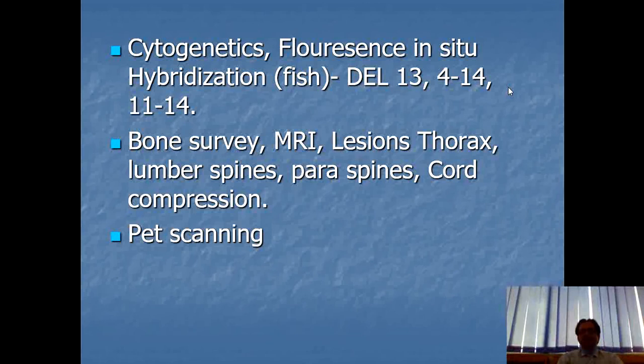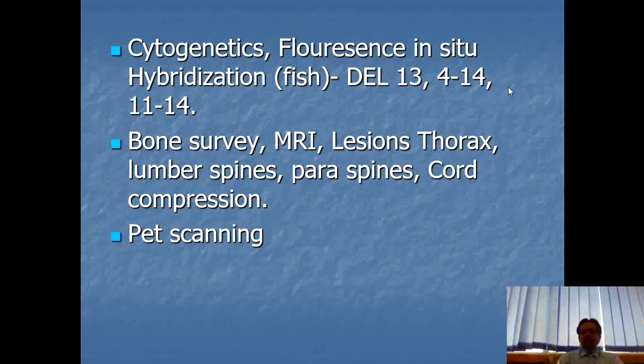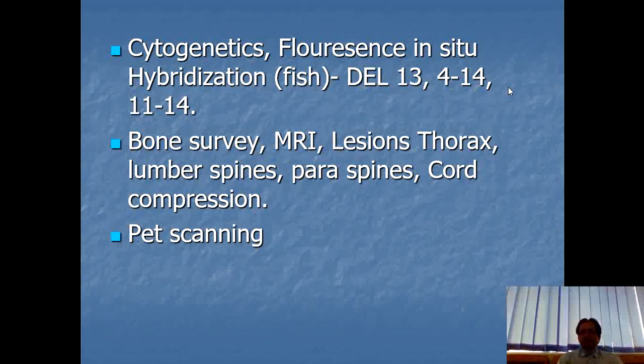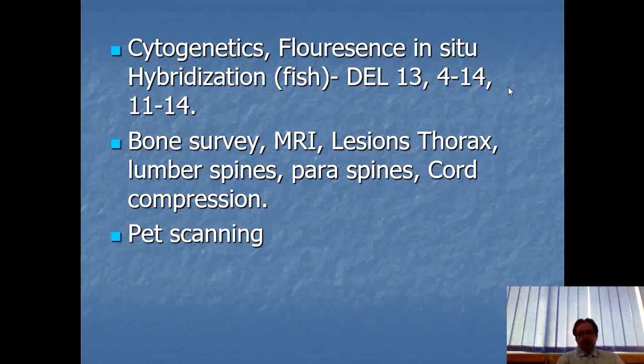Bone or skeletal survey will reveal lytic lesions on many bones — skull, humerus, hip bones, spine. MRI of the spine, brain, and thorax can be performed; spinal MRI can detect paraspinal plasmacytoma and cord compression caused by paraspinal plasmacytoma. PET scanning can also be very helpful in finalizing the diagnosis of multiple myeloma.